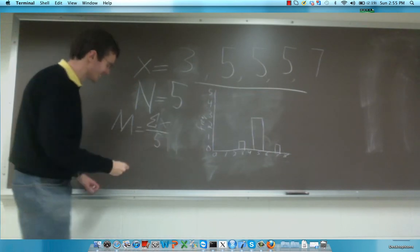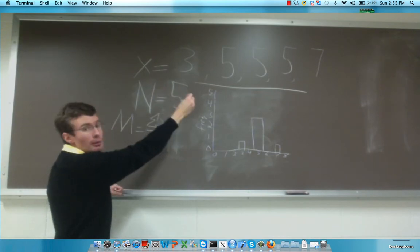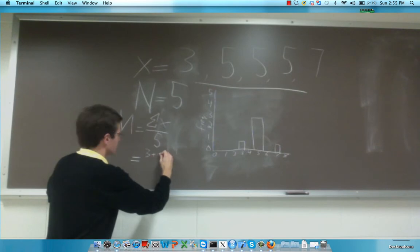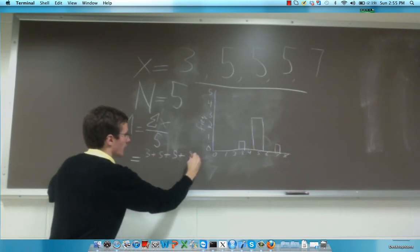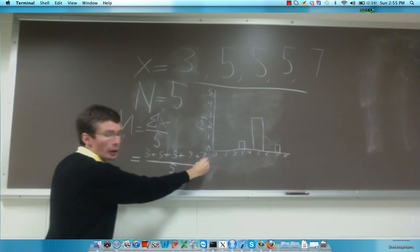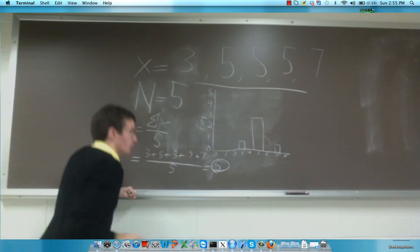Breaking this out, we have the sum of all of our observations in x, which is 3 plus 5, plus 5, plus 5, plus 7, over 5. This reduces to 25 over 5, which equals 5. That's our mean.